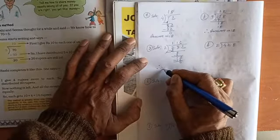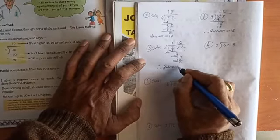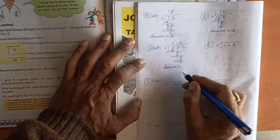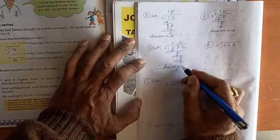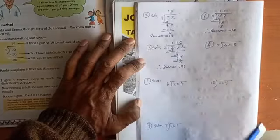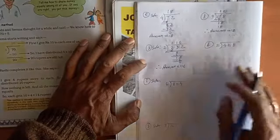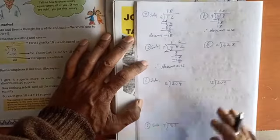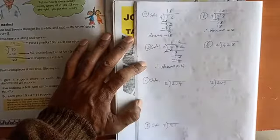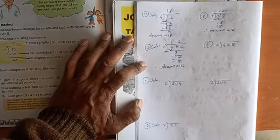The answer is 116. Next: 4 to 8, 2 divided.